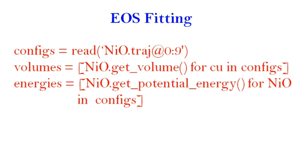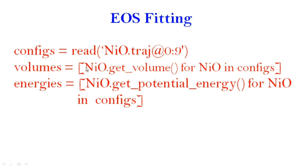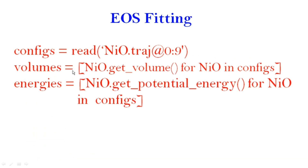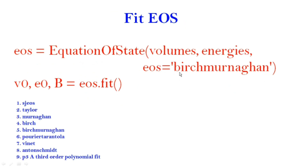Next I read all the information from my trajectory and assign it to 'configs'. This config contains all trajectory information assigned to nio. I then fetch the volume and energy from each configuration using nio.get_volume() and nio.get_potential_energy(). To fit the equation of state I use one variable 'eos' which calls the EquationOfState function with arguments: volume, energy, and the EOS type — in this case Birch-Murnaghan.